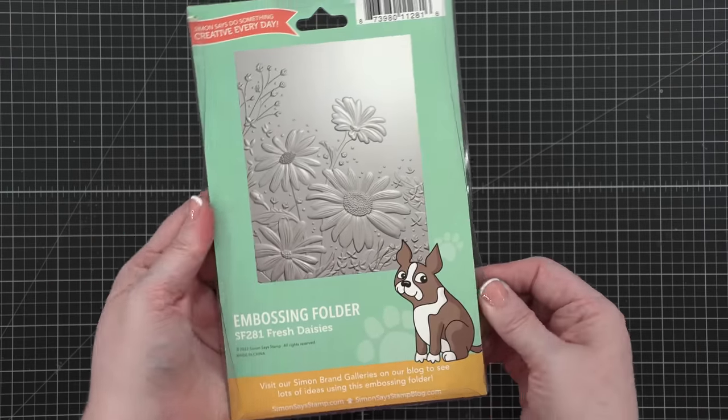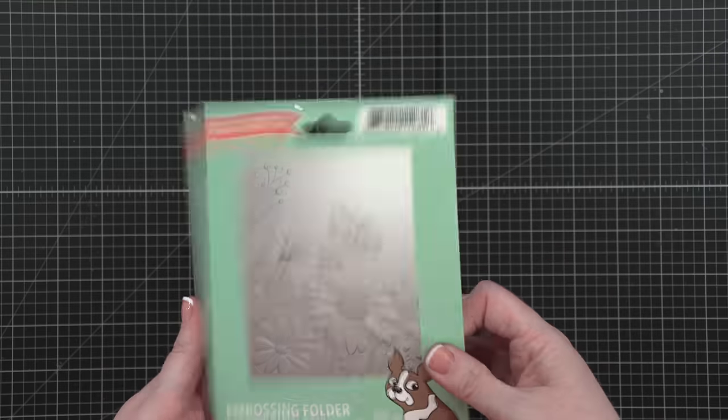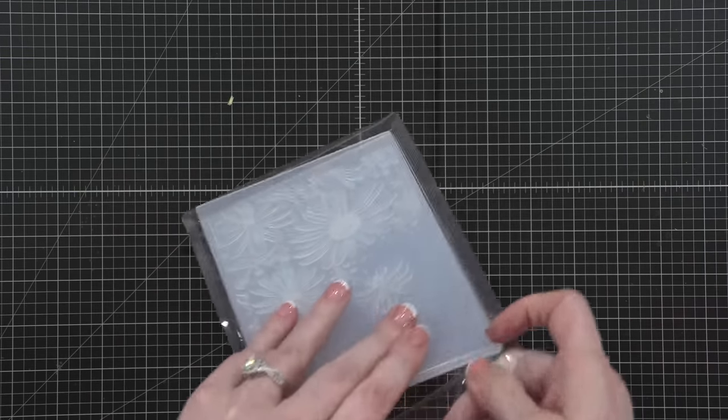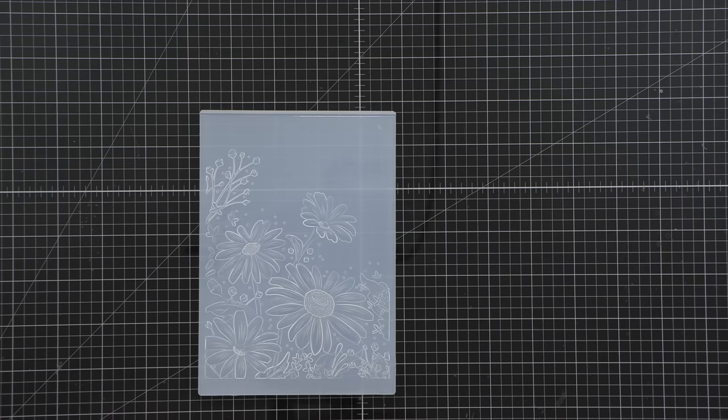Hello everyone, Christina here. In this video, I'm going to be using the Fresh Daisies embossing folder from Simon Says Stamp. It was included in the latest card kit, the October 2022.